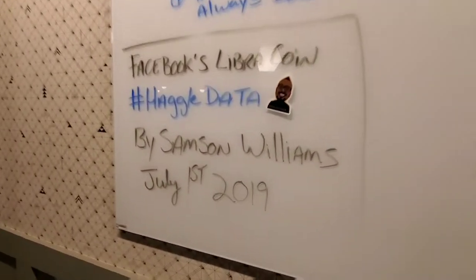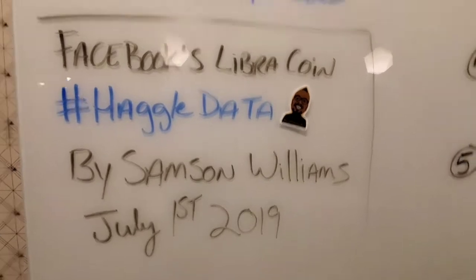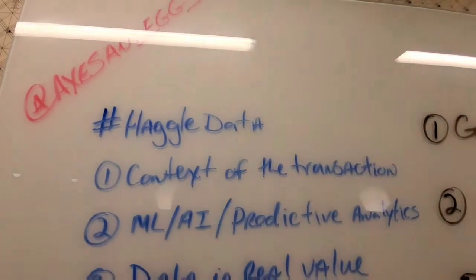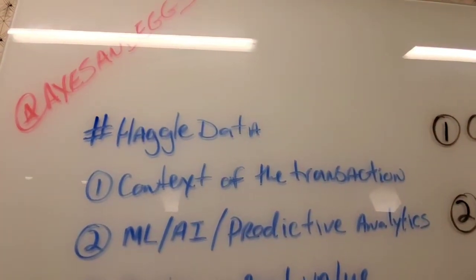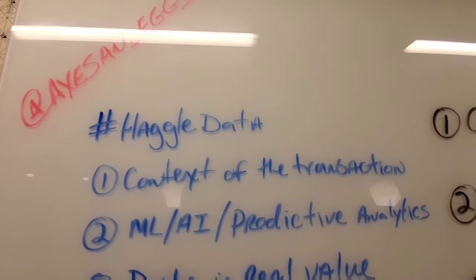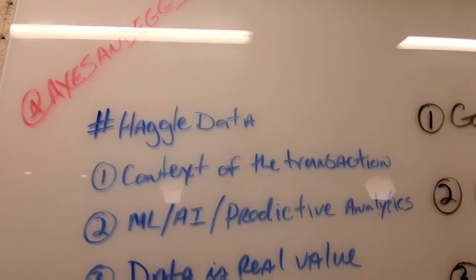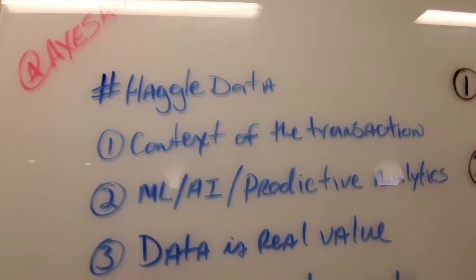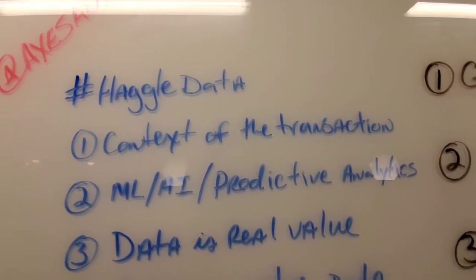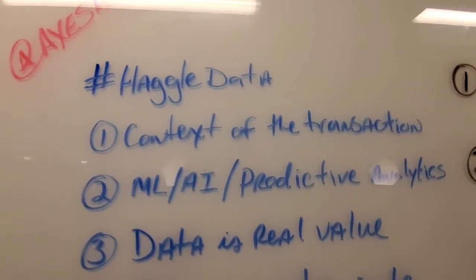So what is haggle data? Here's what you need to know: haggle data is pretty straightforward — it's the context of transactions. Never before in human history have we been able to see the conversations between two people haggling over a chicken: 'I want to buy a chicken' — 'Why do you want to buy a chicken?' — and the back and forth. This is important because using machine learning and AI we can actually develop better predictive analytics on customer behavior.